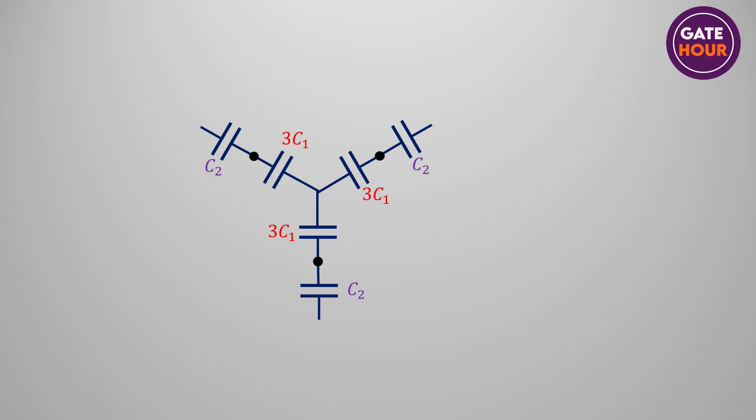Since the star point and armor are at earth potential, the capacitors 3C1 and C2 of each branch are now in parallel as shown. Therefore, the effective capacitance of each branch is 3C1 plus C2.